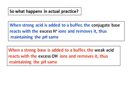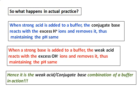Similarly, when I add a strong base, the weak acid which is present reacts with this excess hydroxide ions and removes it, and therefore the pH remains the same. It is a weak acid conjugate base combination of a buffer in action. That's the reason the acid has to be weak, and then only the conjugate base, a stronger one, will react with the hydrogen ions to remove it.